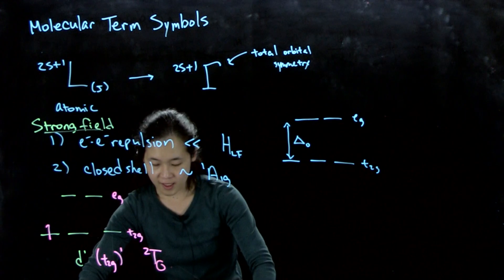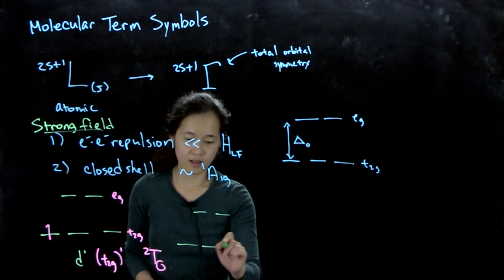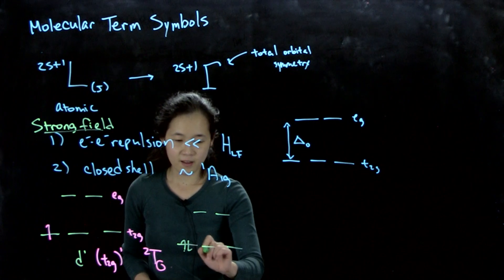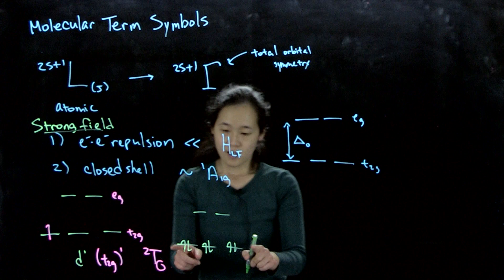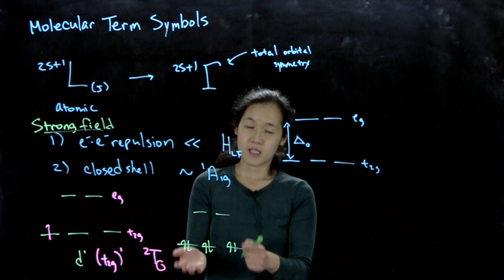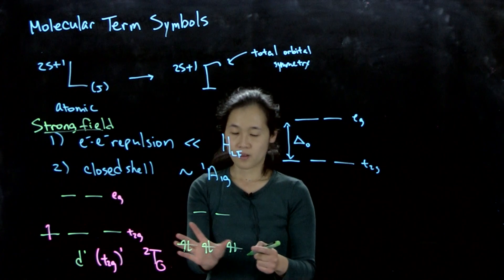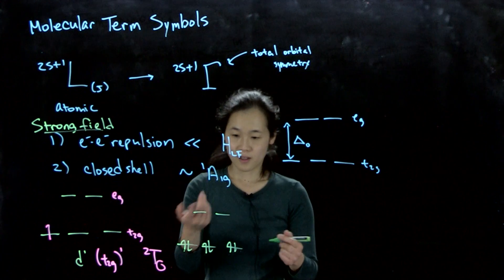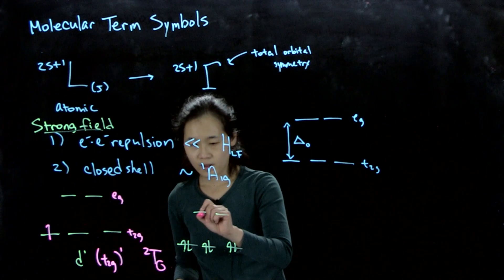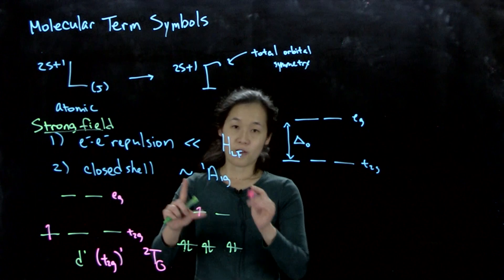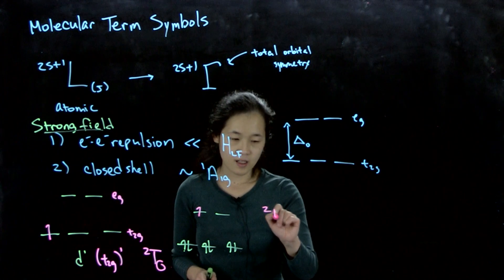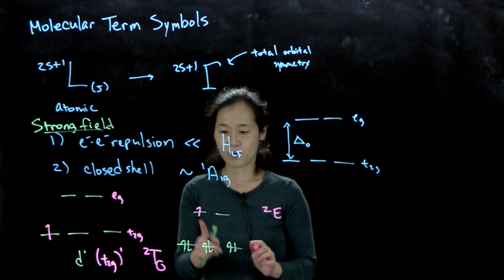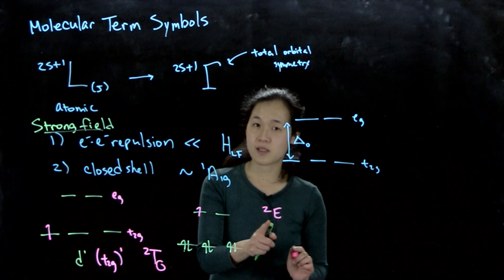If on the other hand, we had something like, if let's say these are all filled, and then now we have, so here, there's no other ways to fill this bottom t2g orbitals. So we only have to worry about unpaired electrons up here. Or let's say, if one unpaired electron in the eg orbital, then this has got to be a doublet e term, right? Because we have two ways to fill this in. E means it's doubly degenerate.